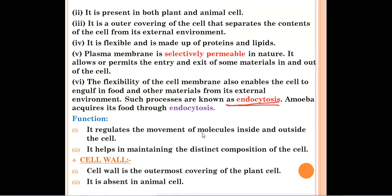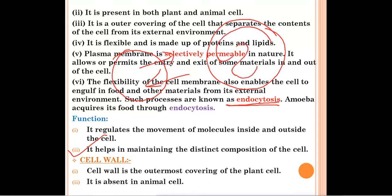Two functions of plasma membrane: first, it regulates the movement of molecules inside and outside the cell — since it is a selectively permeable membrane, molecules can only go in or come out through it. Second, it helps in maintaining the distinct composition of the cell and protects the inside components of the cell.